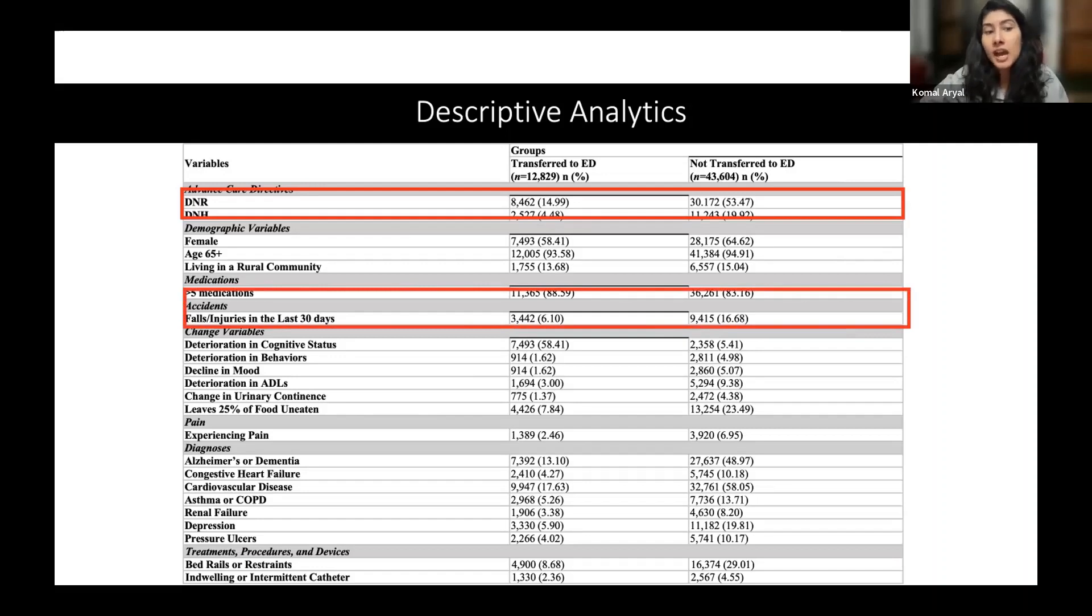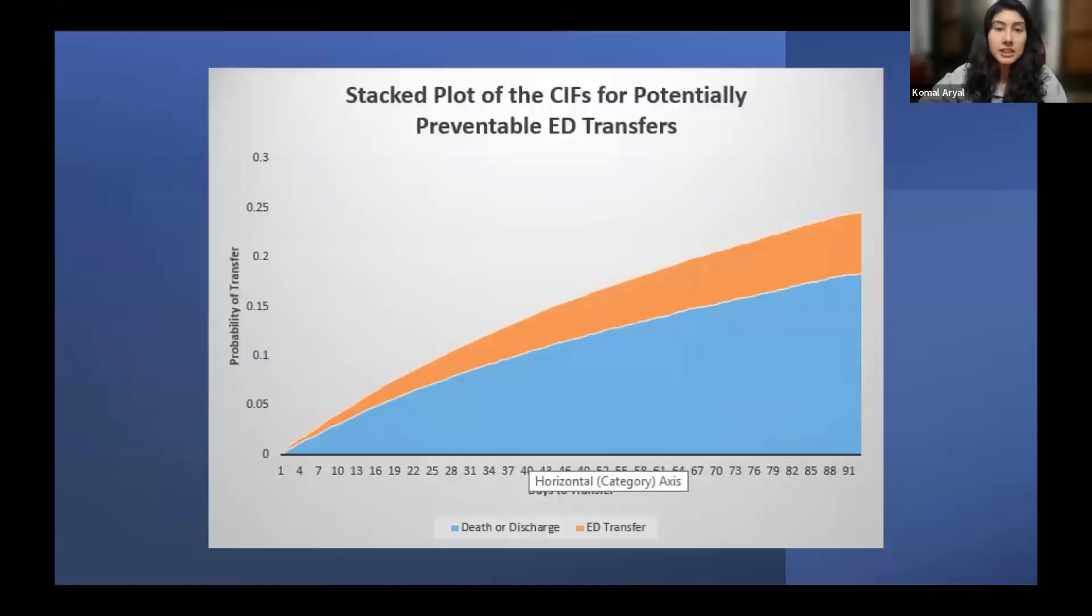Surprisingly, those that have experienced a fall or an injury in the last 30 days were also less likely to be transferred to the emergency department. And similar to what the literature has said before, those with Alzheimer's or dementia were less likely to be transferred to the ED.